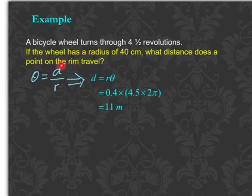To solve the problem, we have to rearrange this formula to make it look like this. You are asked to find d, which is the length of the arc. Make sure theta is in radians. Four and a half turns times 2π radians.